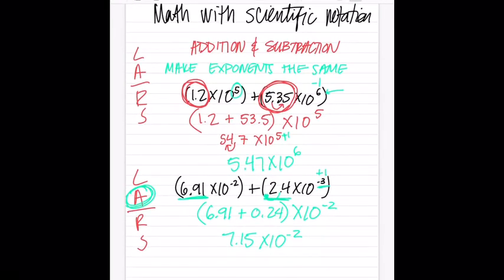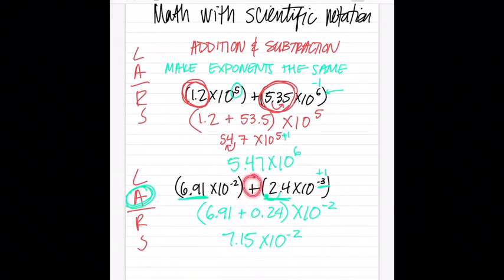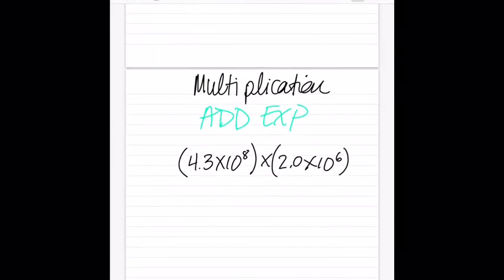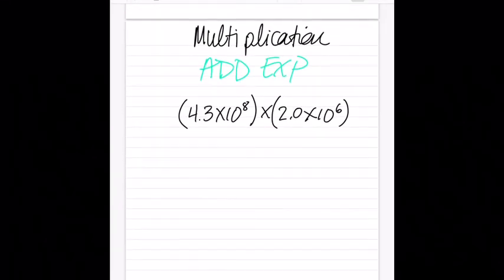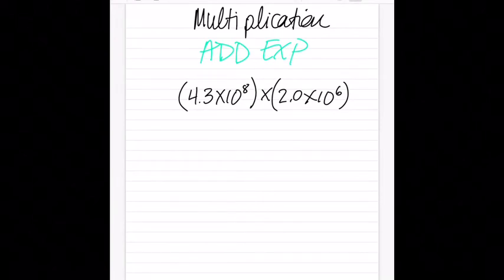I didn't show a subtraction problem, but addition and subtraction work exactly the same way — the only difference is the symbol. Instead of adding to get 7.15 you would subtract. The exponent process works exactly the same. If you really need me to show you a subtraction problem, just let me know.